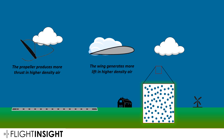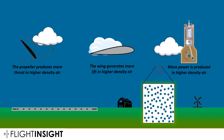The wing generates more lift in higher-density air — there are more air molecules for the wing to turn and deflect downwards. And the engine produces more power. Engines, just like a campfire, require air to breathe and combust. So more air in the cylinder means more power produced. We care about the density of the air, and we want a way to express it that helps us with flight planning.